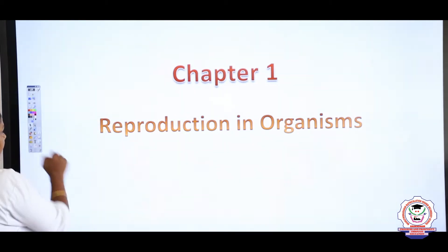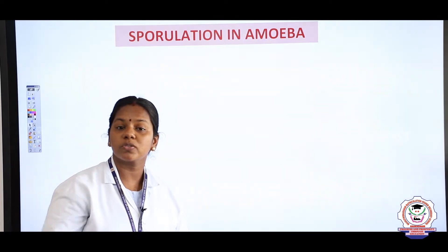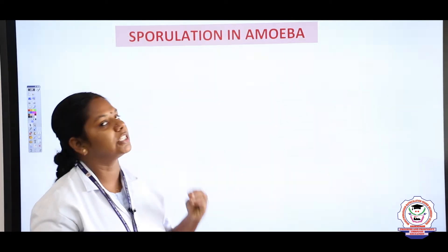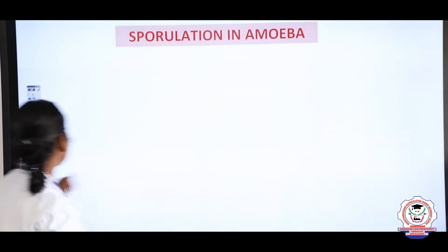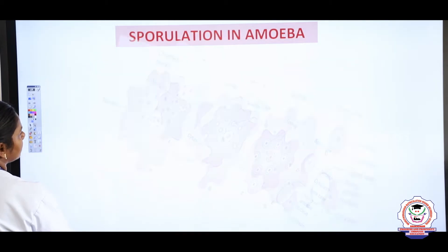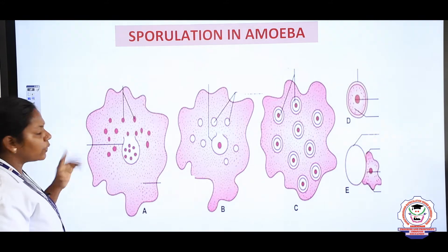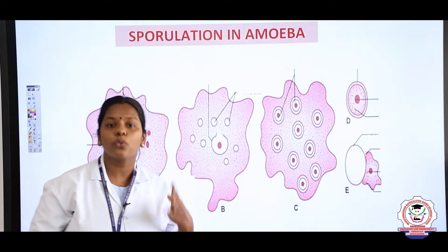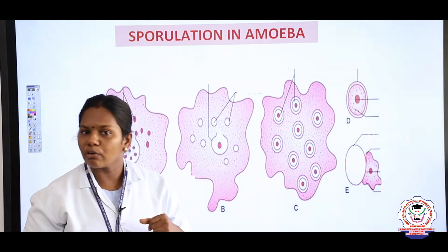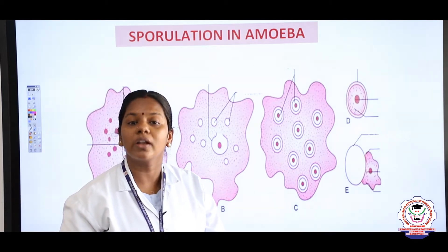Sporulation in amoeba — what do you mean by sporulation? If an organism reproduces by producing spores, it is said to be sporulation. Now we are going to discuss how it takes place in amoeba. During unfavorable conditions — when the climate is too hot, extreme temperature, heavy rainfall, or some adverse conditions — amoeba undergoes a special mode of reproduction called sporulation.